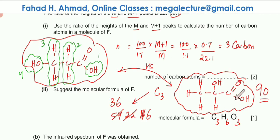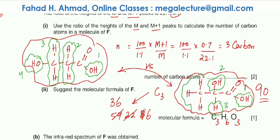Looking at the second isomer: the first O-H is chemical environment one; the second O-H (different from the first) is environment two; the CH is environment three; and the CH₃ protons (all identical) are environment four. So this isomer also has exactly four chemical environments — that doesn't help us distinguish between them.